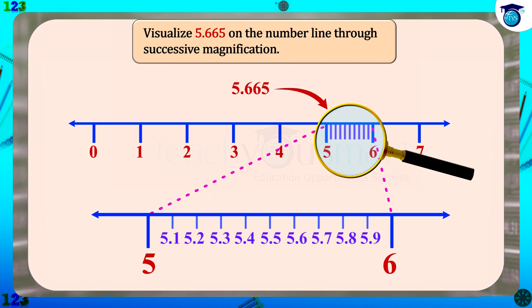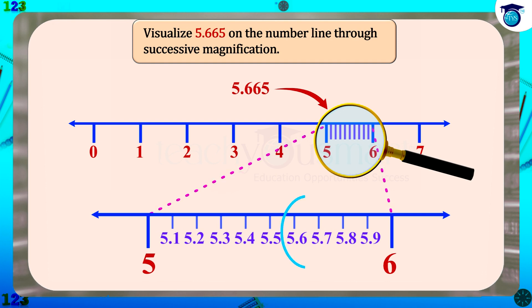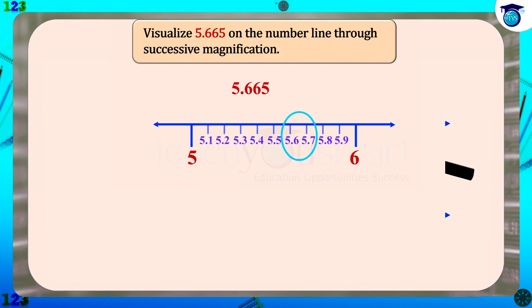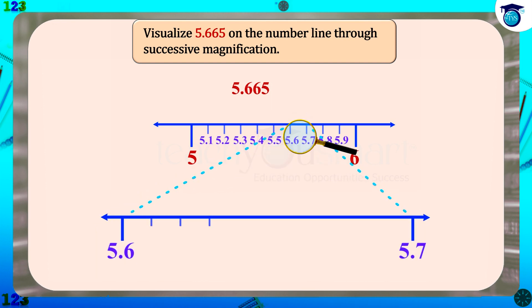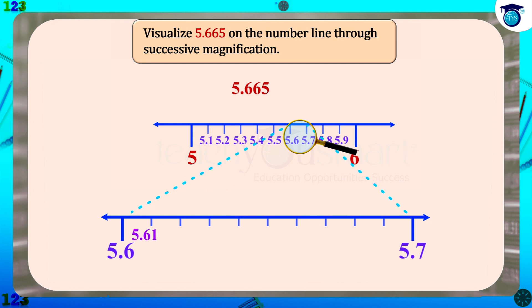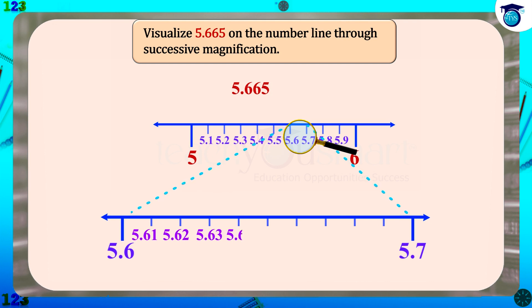Since 5.66 lies between 5.6 and 5.7, divide the distance again into 10 equal parts, and mark the points as 5.61, 5.62, etc. to 5.69.